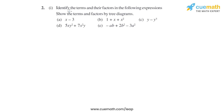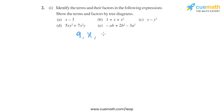Question 2 of this exercise says: identify the terms and their factors in the following expressions, and show the terms and factors by tree diagram. First of all, we will learn what terms and factors are. Terms are like single numbers, let's say 9, or variables like X or Y, or the product of numbers and variables.